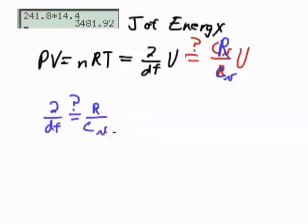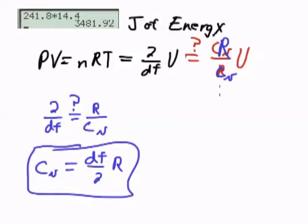Let's check that. Is R divided by C sub V equals 2 divided by the degrees of freedom in general? C sub V equals the degrees of freedom divided by 2 times R. And that is true. So this is correct.